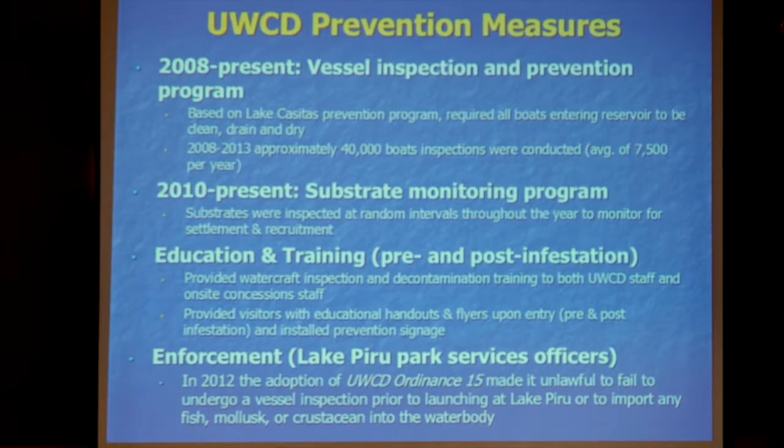Clayton Strand, Senior Park Services Officer at Lake Piru, shares the history of their prevention program. When the quagga issue emerged in California's Colorado River system in late 2007–2008, Casitas was a front-runner. Piru followed and implemented an inspection program requiring all boats to be clean, drain, and dry. For five and a half years that worked well — they had no quagga mussels, inspecting a low of around 5,000 and high of 11,000 boats per year, averaging about 7,500.